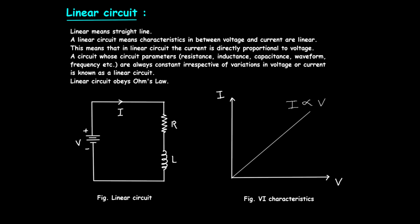2. Ohm's Law: Linear circuits obey Ohm's Law, which states that the voltage across a resistor is directly proportional to the current passing through it. The formula for Ohm's Law is V equals I times R, where V is the voltage, I is the current, and R is the resistance.